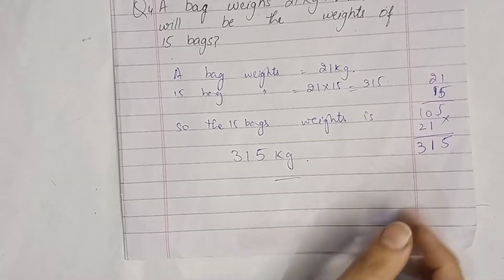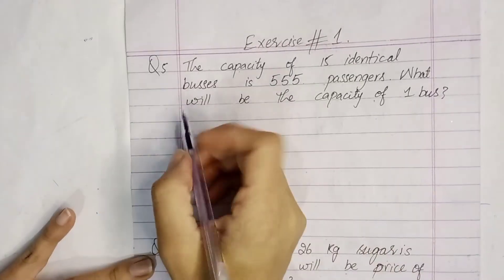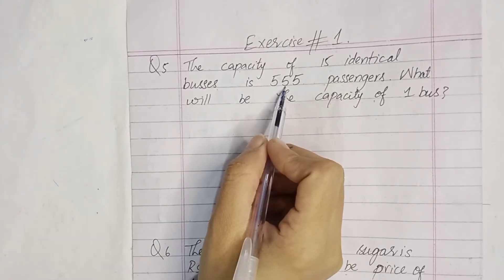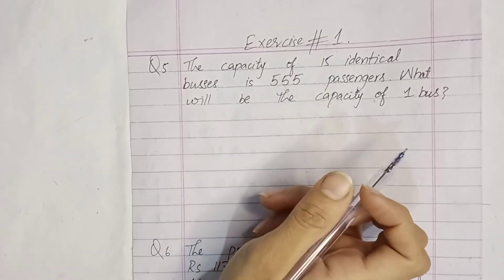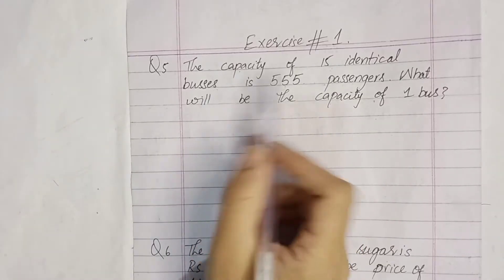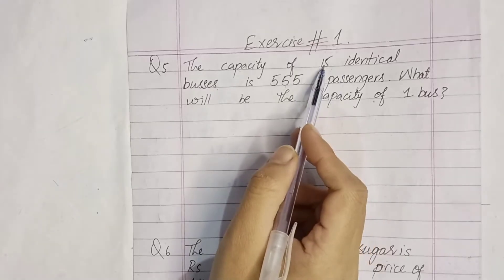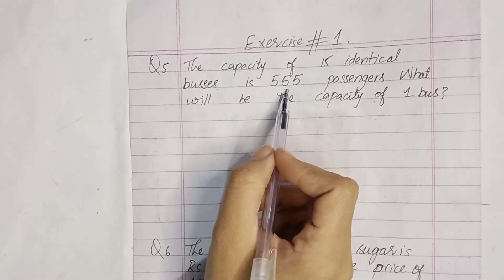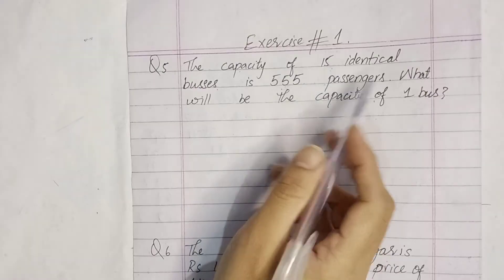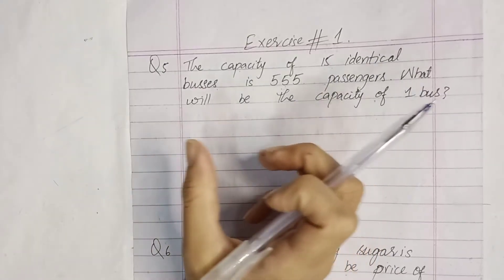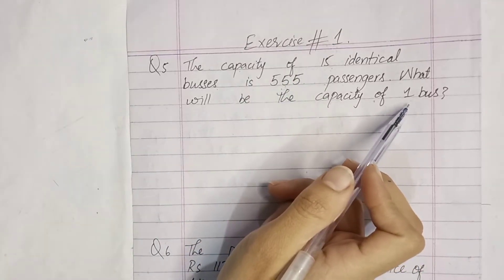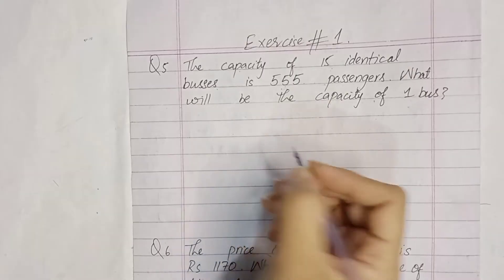Now students, question number 5: the capacity of 15 identical buses is 555 passengers. What will be the capacity of one bus? Now here we have to find the value of one from many, so we do not multiply — we divide. When you have to find more, you multiply; when you have to find one, you divide.